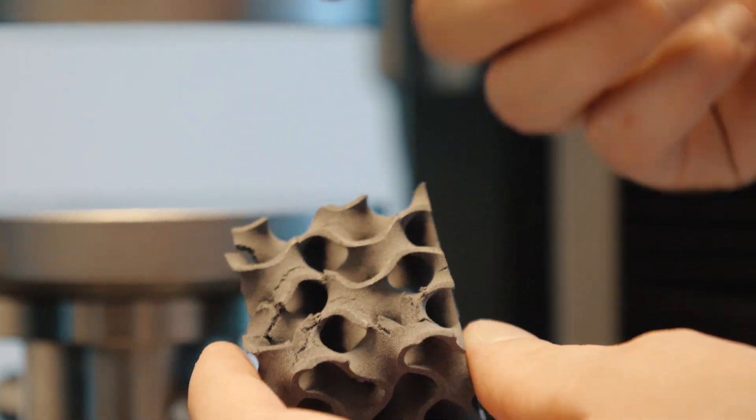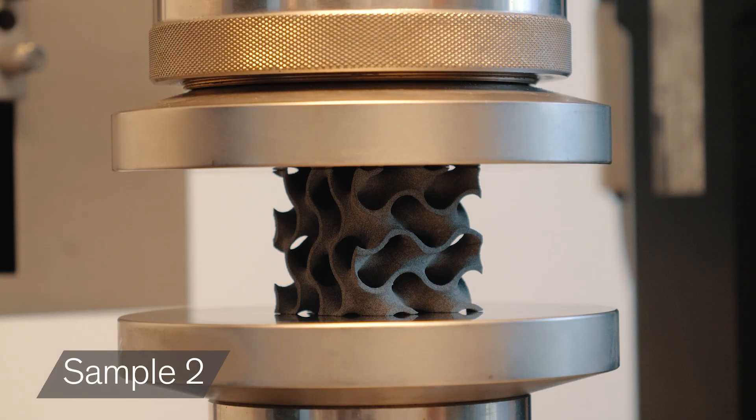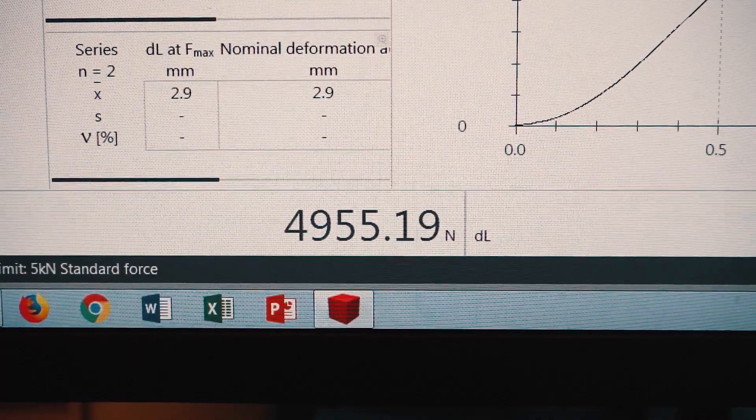The goal of this test is to check which kind of printing parameters give us the best performance in terms of mechanical properties.